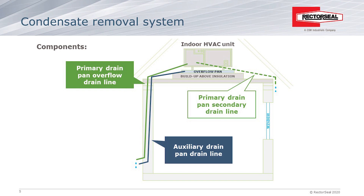A lot of these drain lines end up clogging due to algae or debris from dirt getting into the coil. It all runs through that drain line, especially in the hot months — algae grows very quickly and you get a lot of clogged lines. So the float switches are really there to protect from overflows.